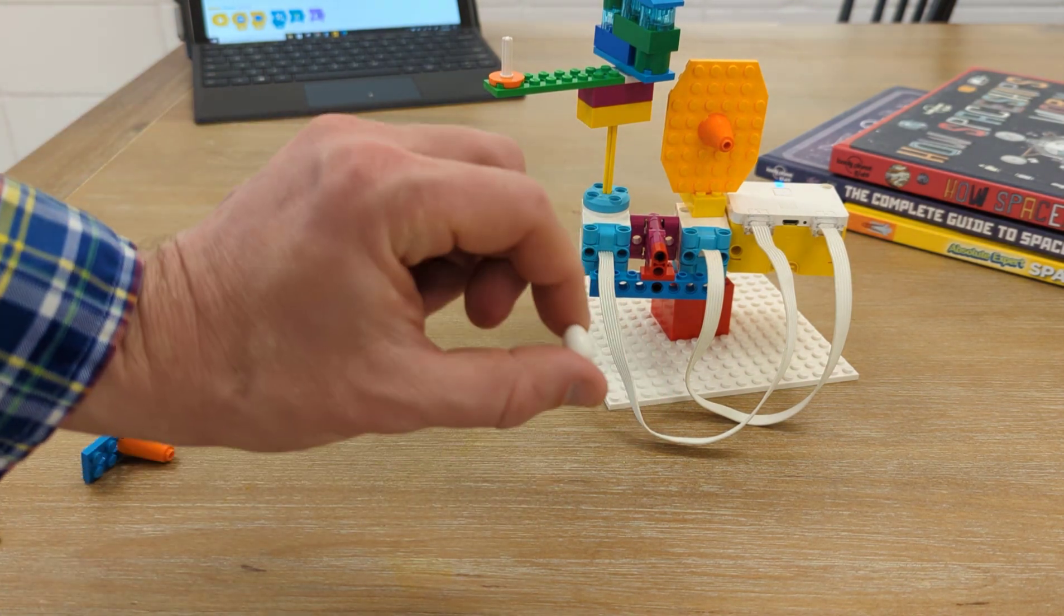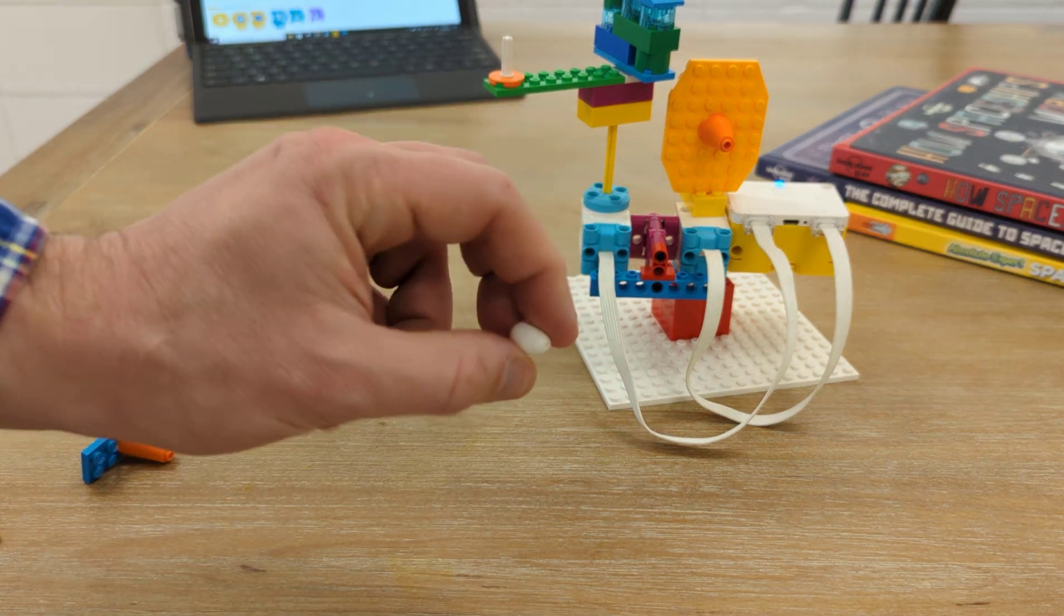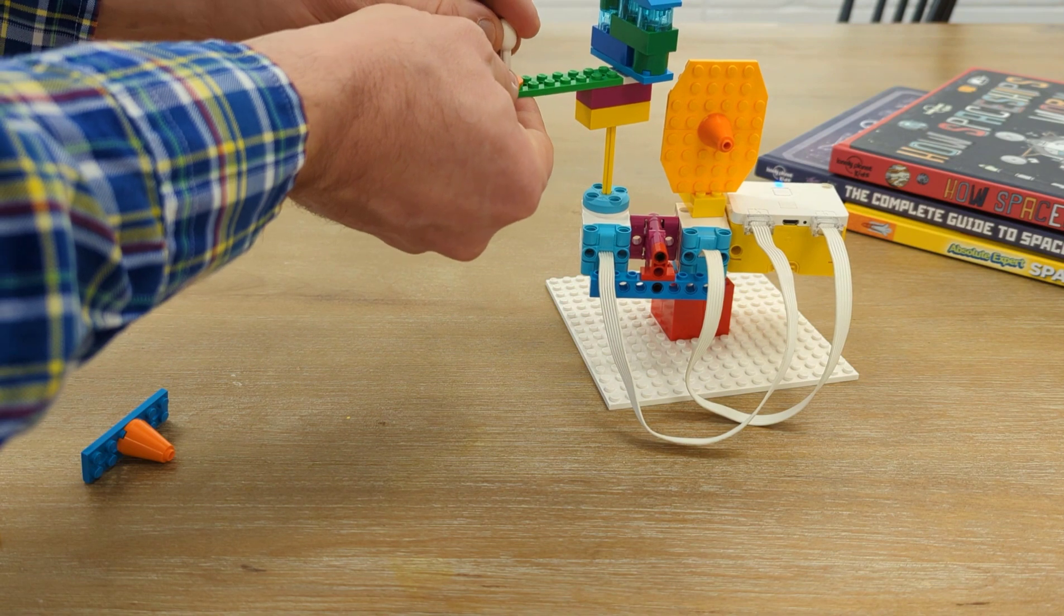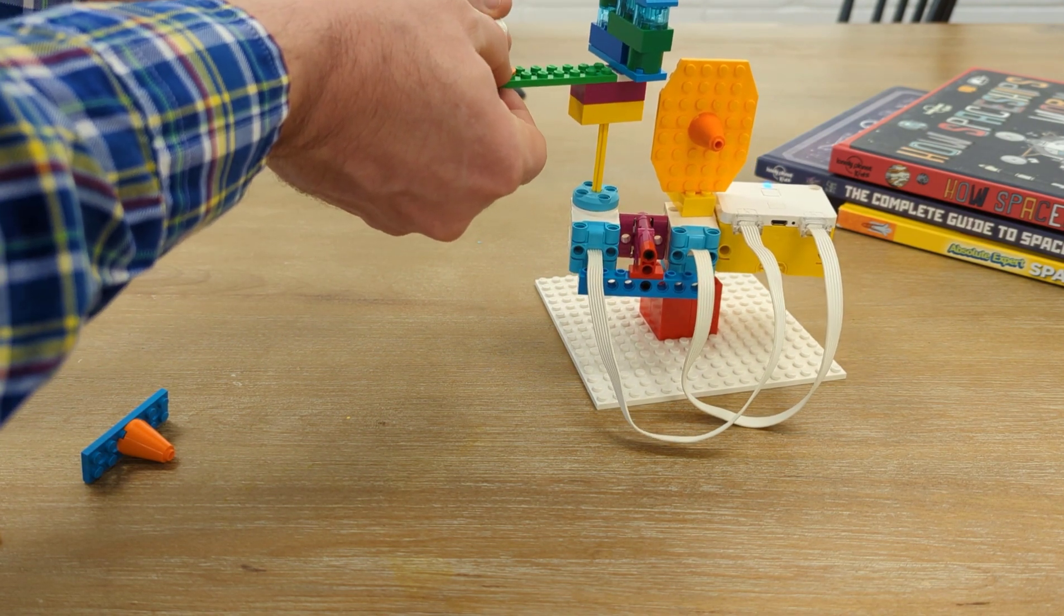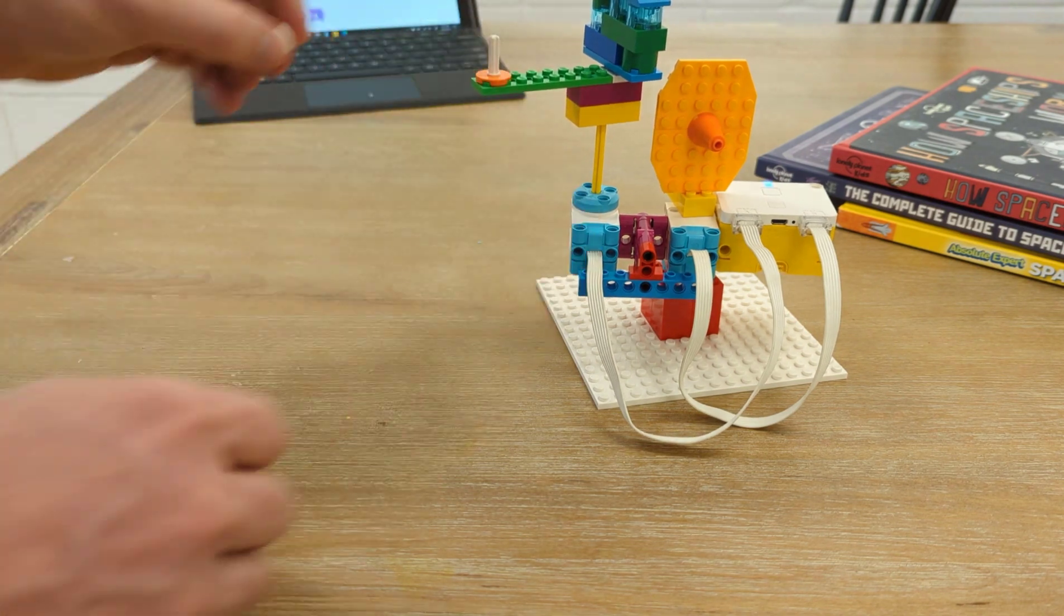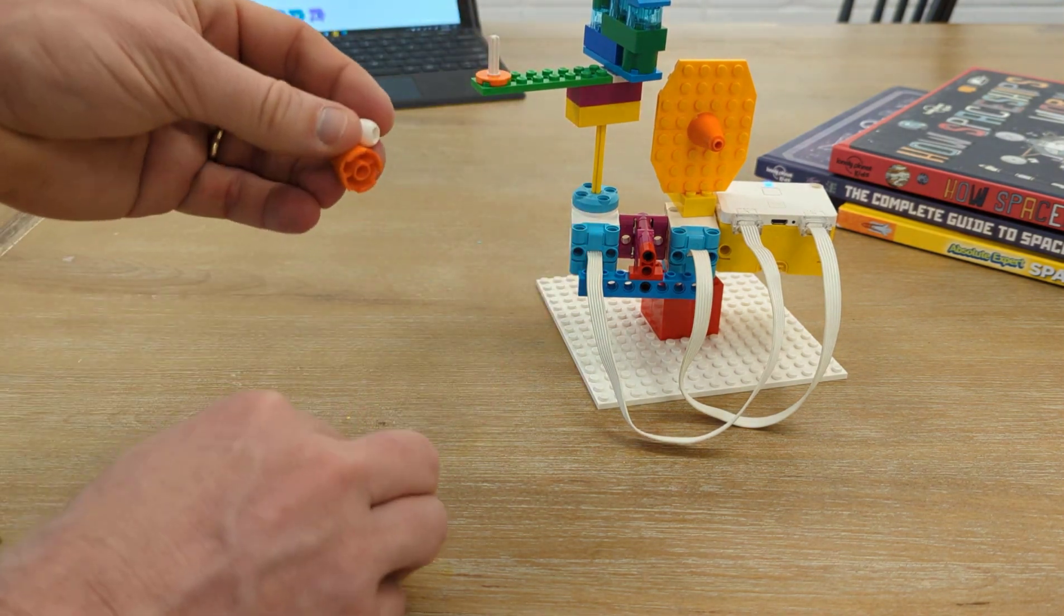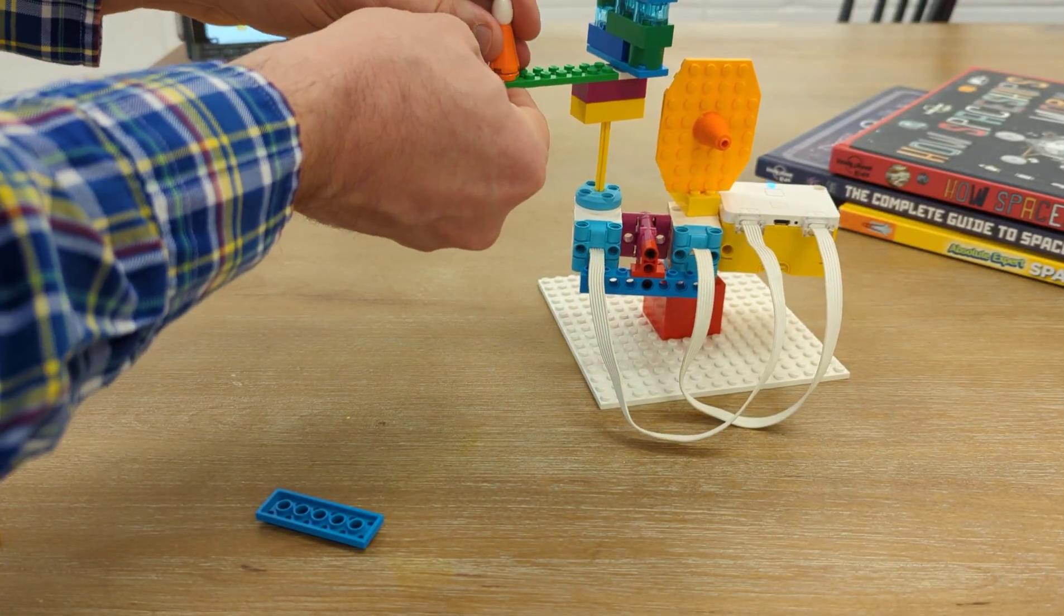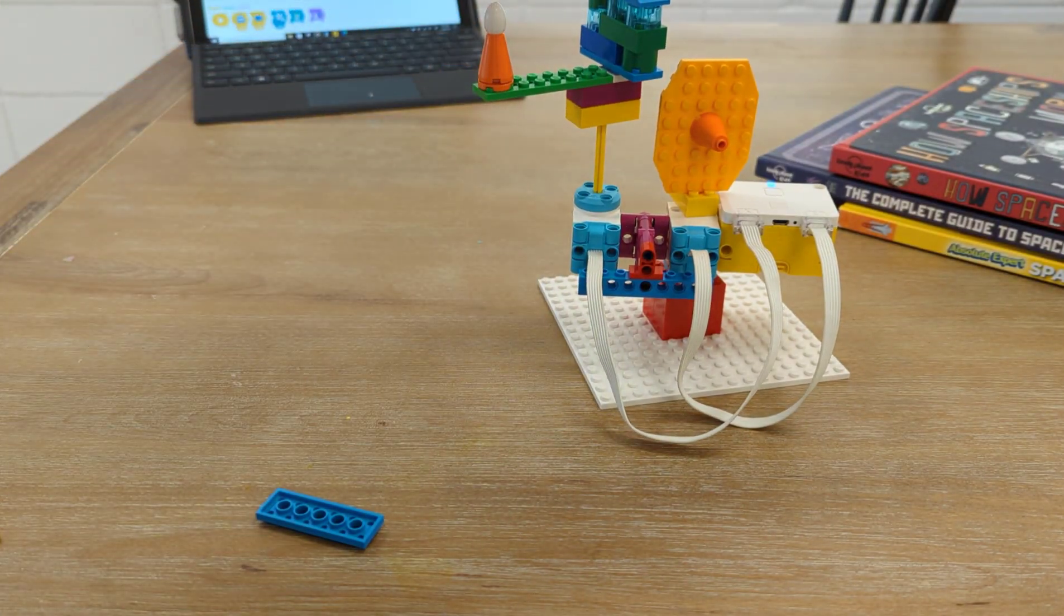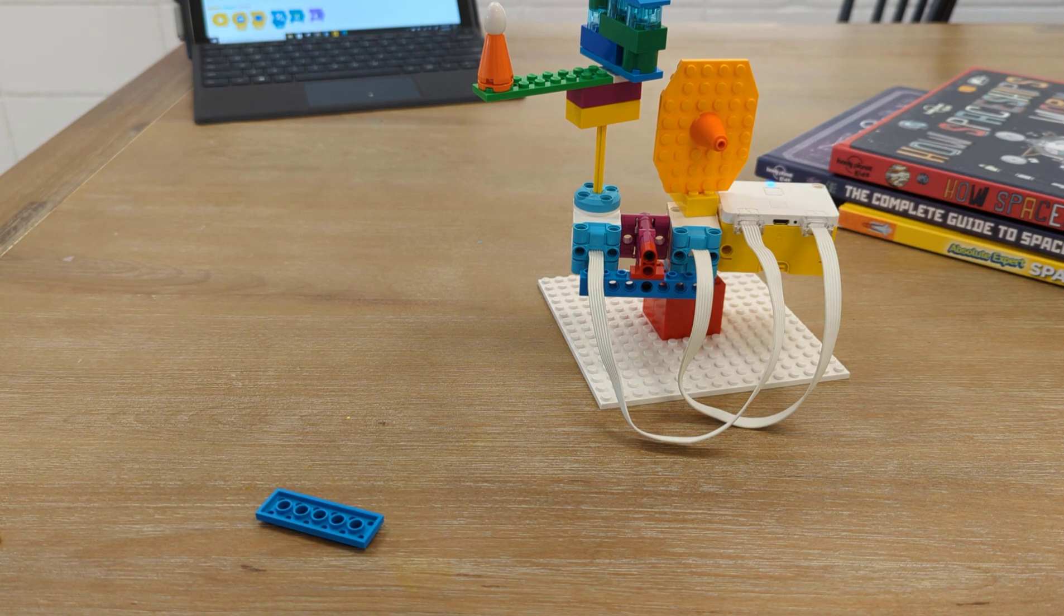And finally for a moon, the moon is tiny. So we'll use this little egg piece from the kit. We will use this piece to connect it. So we've got our moon, our earth, and they should rotate around the sun. Let's see if it works.